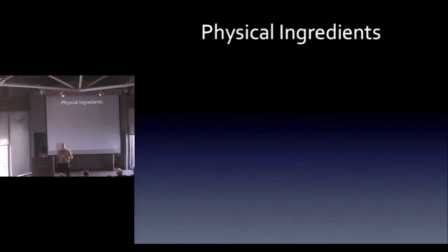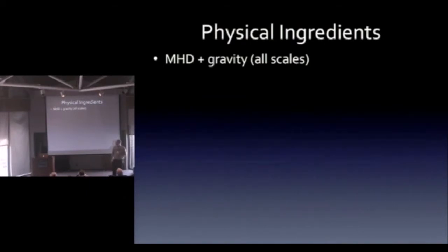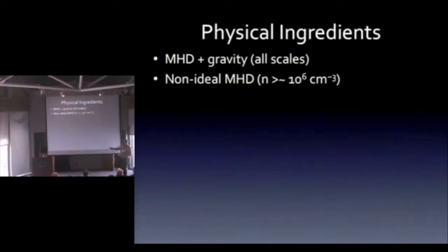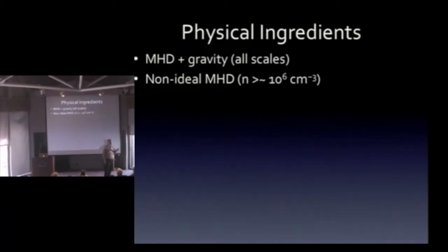What physics do we need? Things get nasty here — even nastier than in Phil and Dushan's cases — because the list of physics you need if you want to get this right is very long. MHD and gravity are fine; we know how to do those. But if you're interested in protoplanetary discs or anything like that, you need non-ideal MHD.